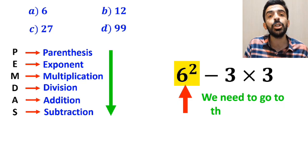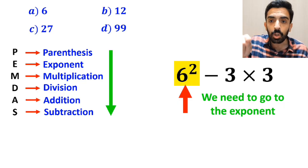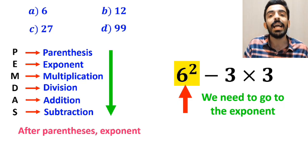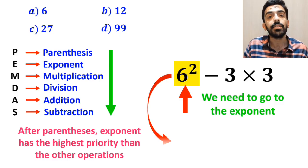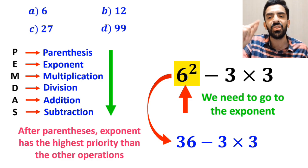And the next step, we need to go to the exponent, because in the PEMDAS rule, after parenthesis, exponent has the highest priority than the other operations. So, this expression simplifies to 36 minus 3 times 3.